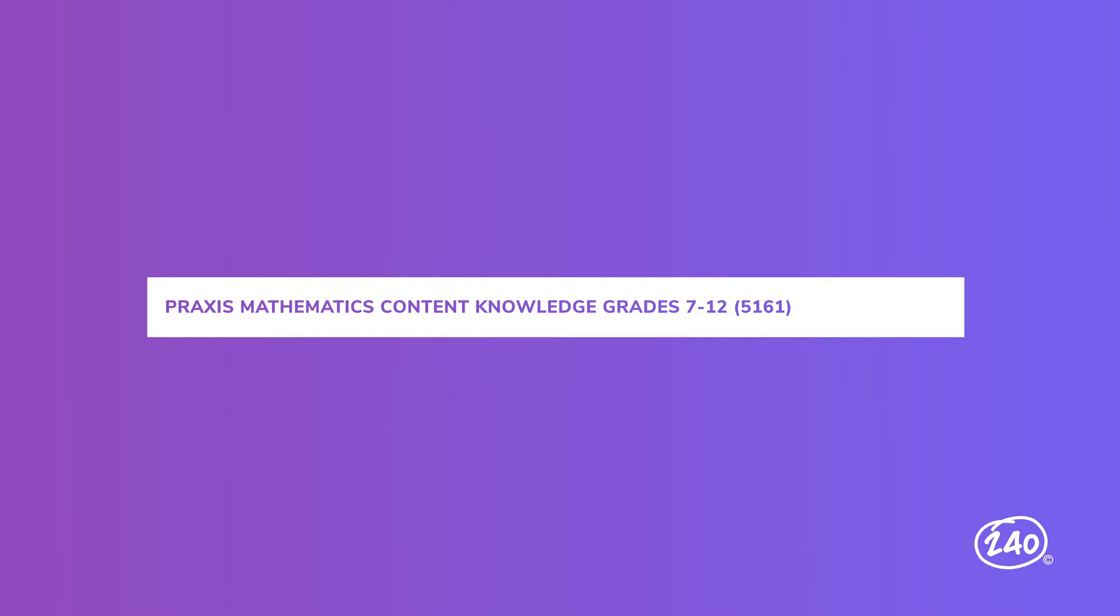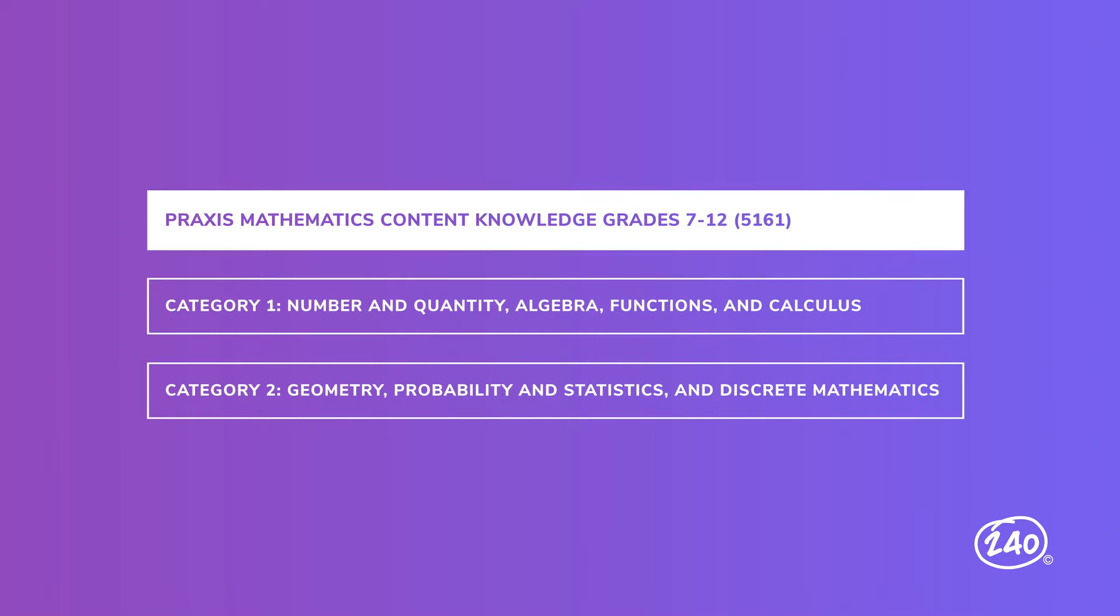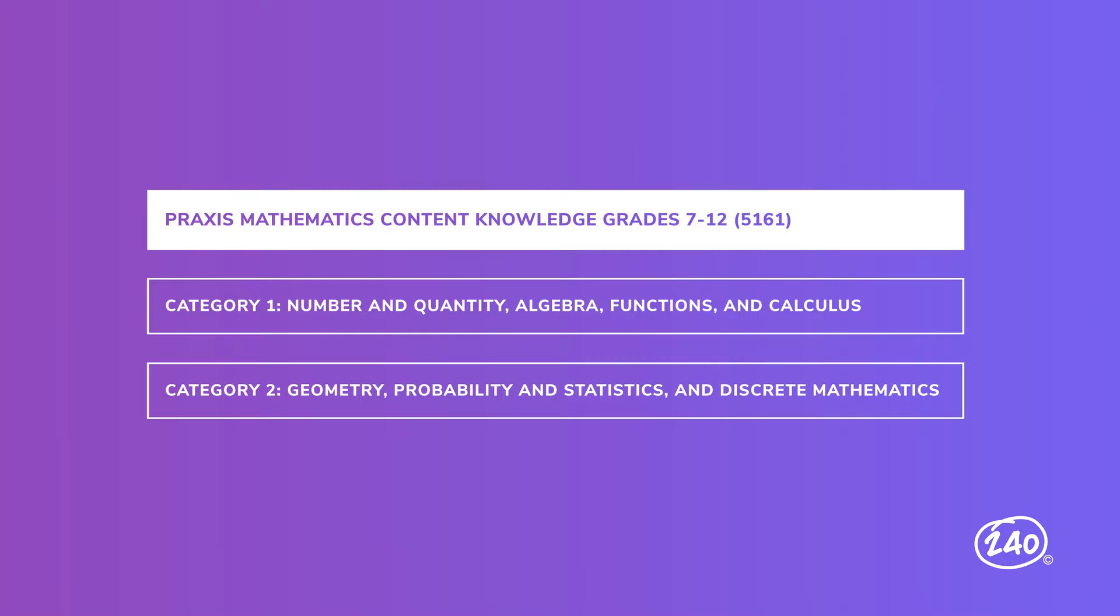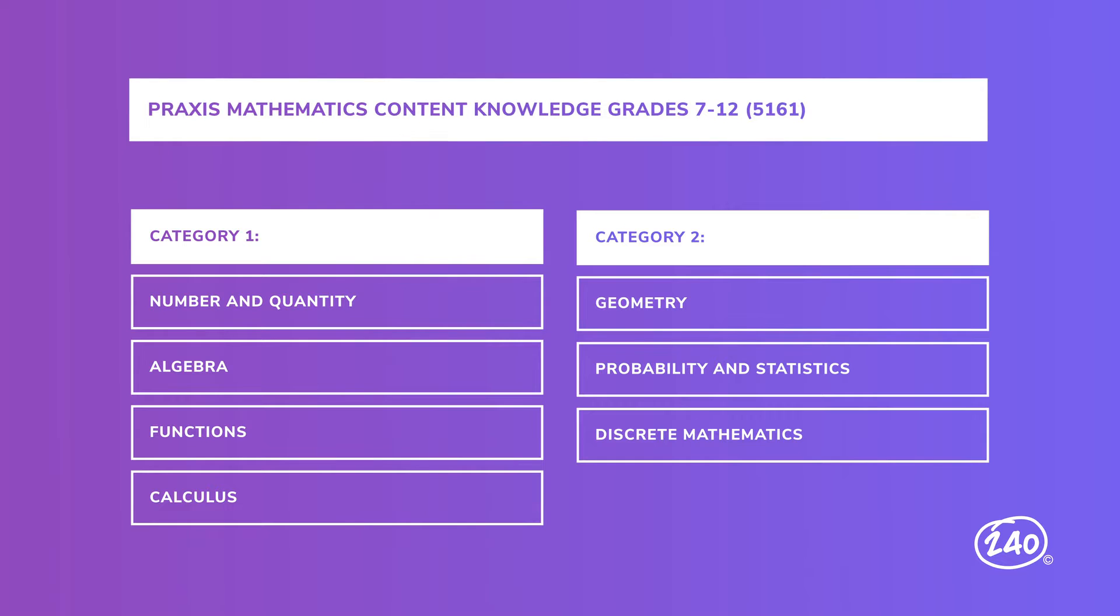Now, the grade 7 through 12 math exam consists of two areas or categories. The first is Number and Quantity, Algebra, Functions, and Calculus, and the second is Geometry, Probability and Statistics, and Discrete Mathematics. Seriously, do you see what they did there? Sure, there are only two categories, but they shoved a ton into each of them. Let's do some creative rearranging. We'll leave the category numbers in place, but we'll make each topic a subcategory. There, this looks much better. Let's take a deeper look at each of these subcategories.